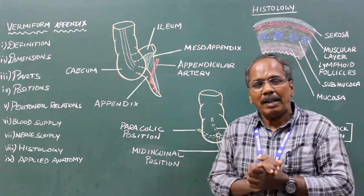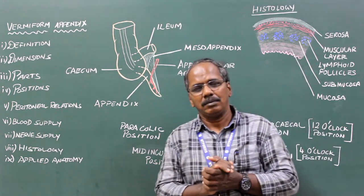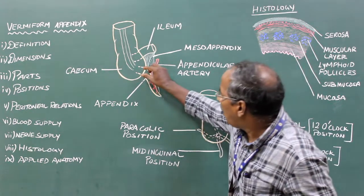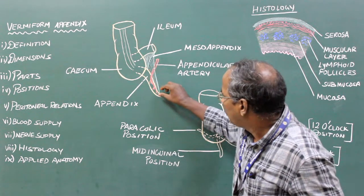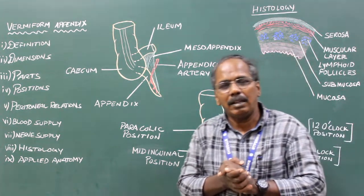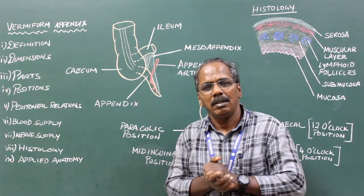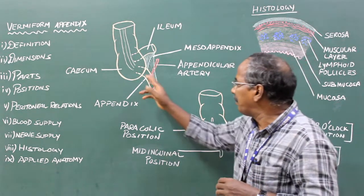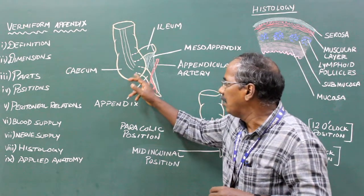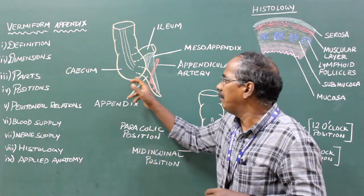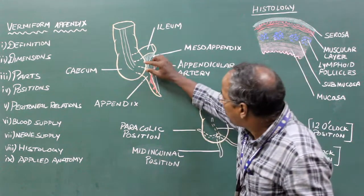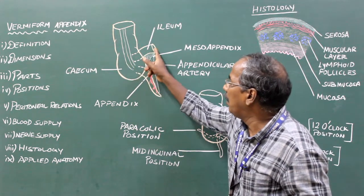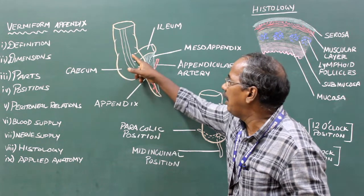Vermiform Appendix - Definition. It is a narrow elongated diverticulum which arises from the posterior medial aspect of the cecum, above 2 cm below the ileocecal junction.